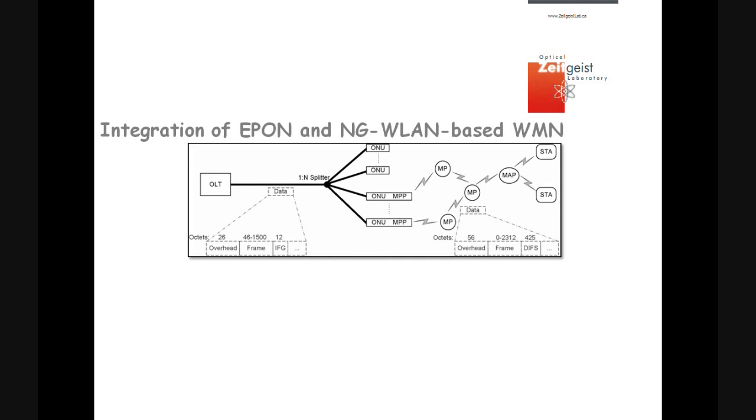This figure shows the integration of EPON and next-generation WLAN-based wireless mesh network, where the typical packets without using any frame aggregation are shown. We note that in EPON, frames are separated by a 12-octet inter-frame gap, whereas in the WLAN-based wireless mesh network, each transmitted frame is followed by a distributed inter-frame space, which denotes the maximum waiting time for receiving an acknowledgement frame.